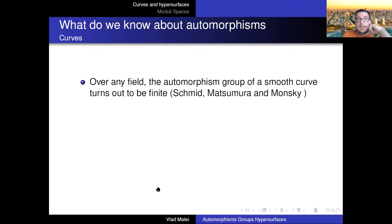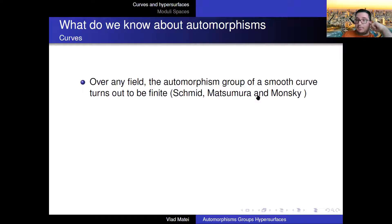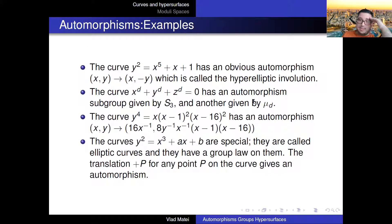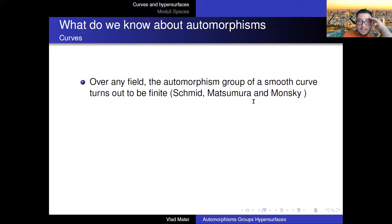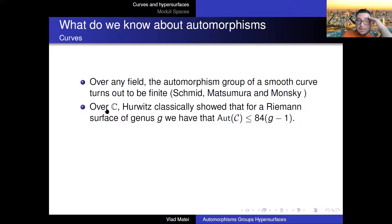It turns out that over any field, the automorphism group of a smooth curve is finite. Schmidt was the first to prove this, and then Matsumura and Monski gave it for any characteristic — this is even characteristic p. The genus needs to be at least two, since otherwise you already implied it could be infinite.